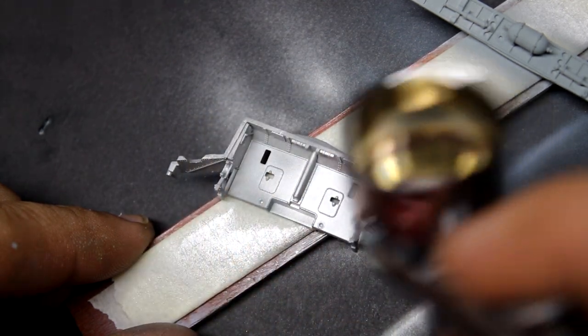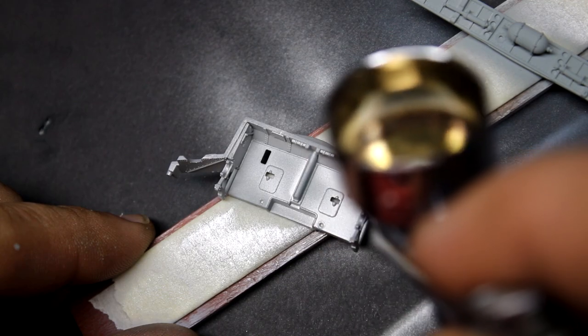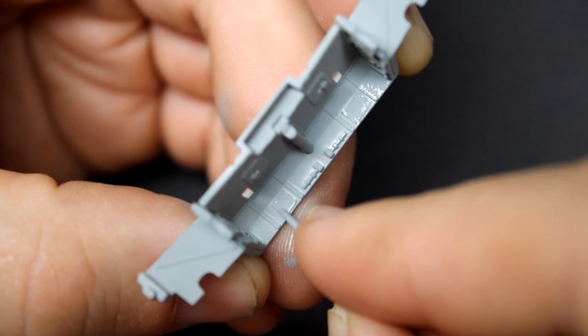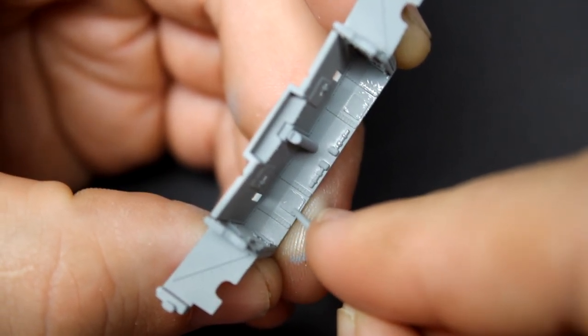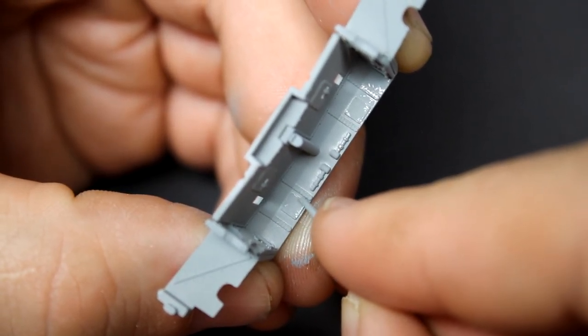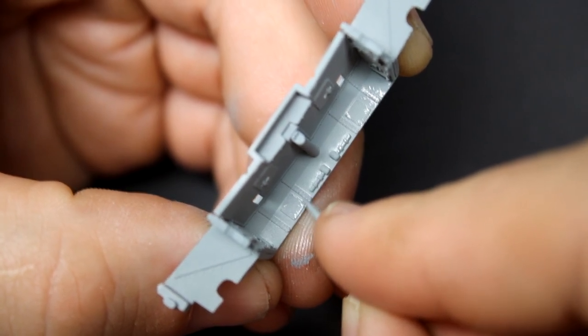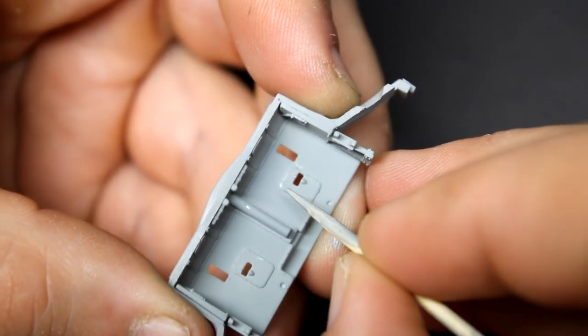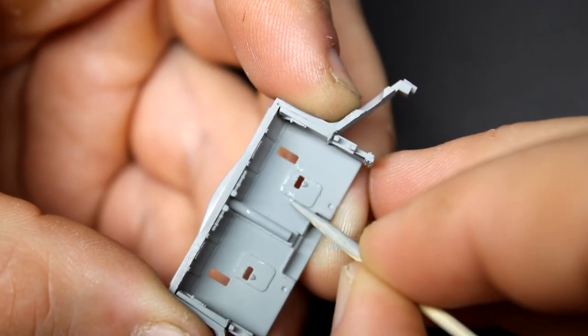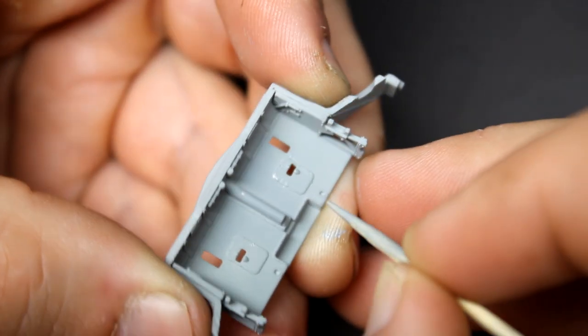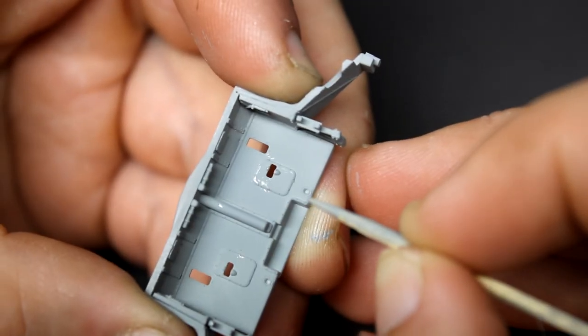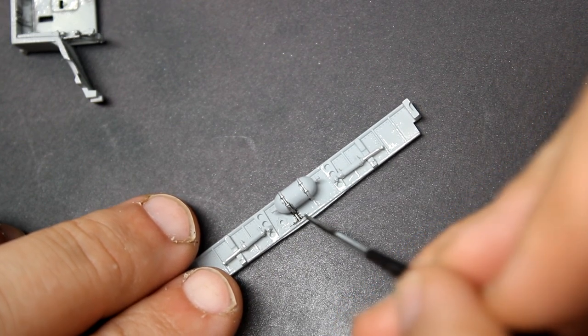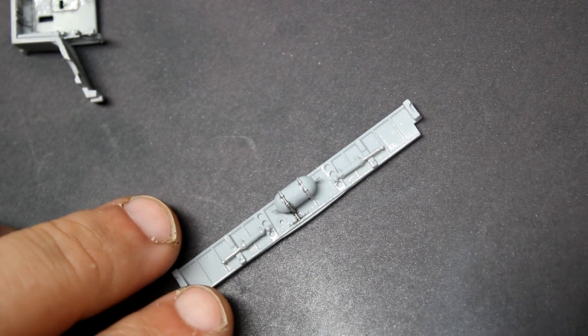When it comes to weathering aircraft models, one of the biggest tips I can give you is to have some good references on hand to work from. Use these references as a guide so you know what weathering is plausible, and it keeps it looking realistic. One thing that really surprised me about Arma's Hurricane is the detail they put into the gear bay. A lot of companies would cut corners here as it's not really visible, but Arma put just as much effort in here as they did on the wings. You can see all the hydraulic rims, all the locking mechanisms, and you can even see the accumulator as well.